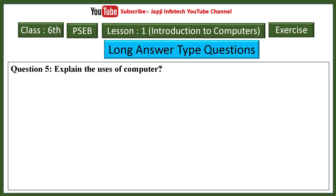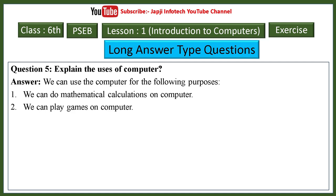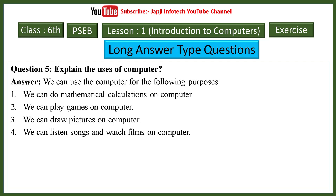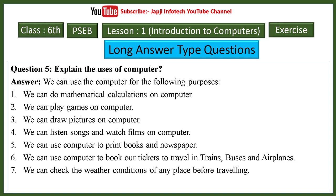Fifth question: explain the uses of computer. We can use computers for mathematical calculations, playing games, drawing pictures, listening to songs and watching films, printing books and newspapers, booking tickets for trains, buses and airplanes, checking weather conditions before traveling, and printing reports, results, or timetables.